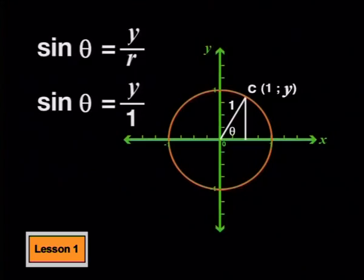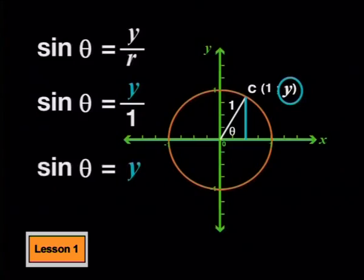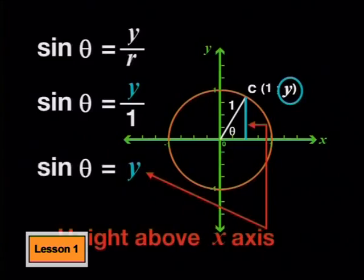This is very interesting. In the unit circle, sin theta's value at any point is the same as the y coordinate for that point. We could say that in another way. Sin theta is the same as the height of any point above the x-axis.